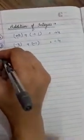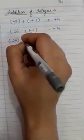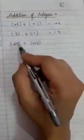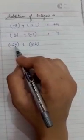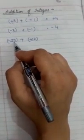Third point, if one integer is negative, let it be minus 25, and the other integer is positive, that is plus 12. If we are adding both the integers, then the sign will be of the bigger number and we will do the difference of both the integers.